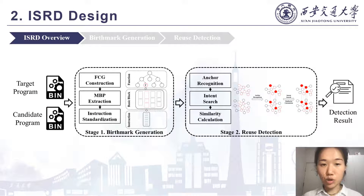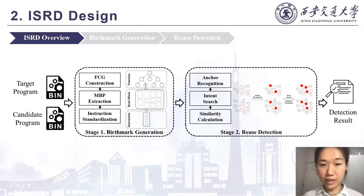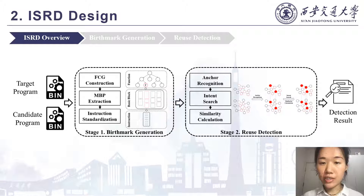Our approach consists of two main stages. The birthmark generation stage constructs the multi-level birthmarks of the target program and the candidate program. The reuse detection stage recognizes anchors and conducts intent search originated from the anchors to significantly accelerate function pair matching.